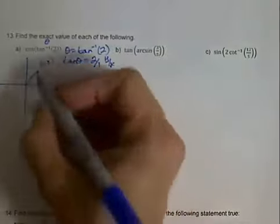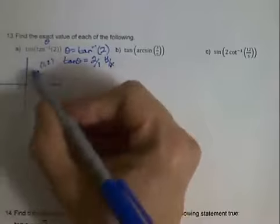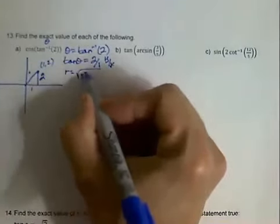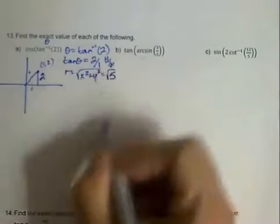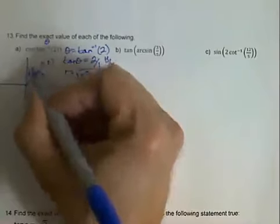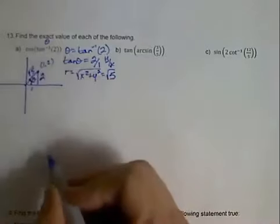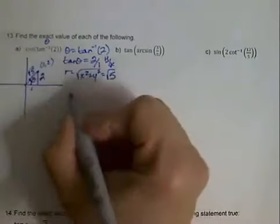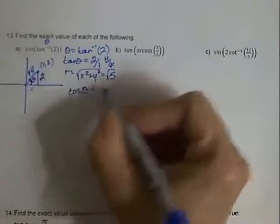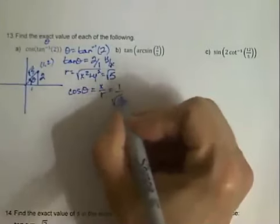We draw in our right triangle: this length is 1, this length is 2, and we find r using r equals the square root of x squared plus y squared, which gives us the square root of 5 for the hypotenuse. This angle is our theta. Now we're finding the cosine of theta — cosine is x over r — so that would be 1 over the square root of 5.